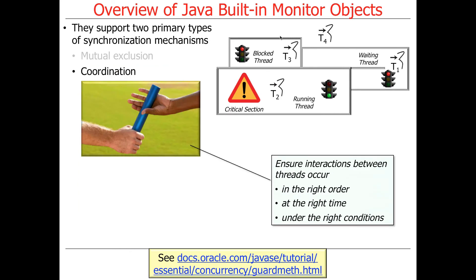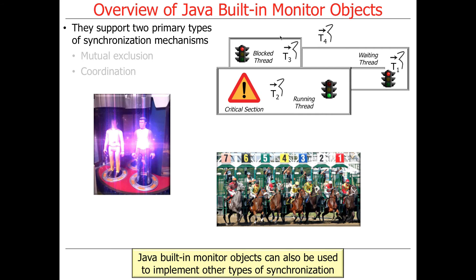The second thing is coordination, which is done with a slightly different set of mechanisms. Coordination is used to ensure that interactions occur in the right order, at the right time, under the right conditions. So coordination and mutual exclusion are the two key things a monitor object provides. Once you have those basic building blocks, you can build higher-level stuff — you could use monitor objects to build barrier synchronizers or atomic data structures. But those are the two primary things provided out of the box.